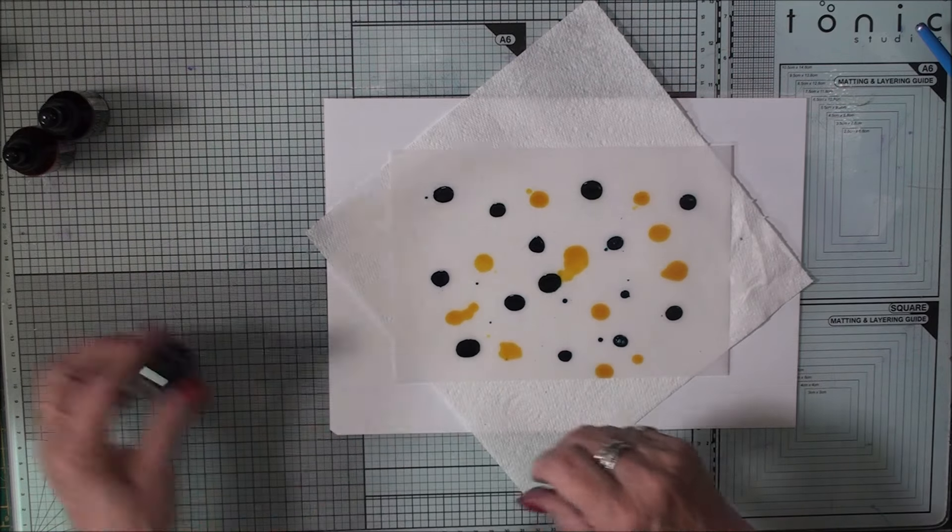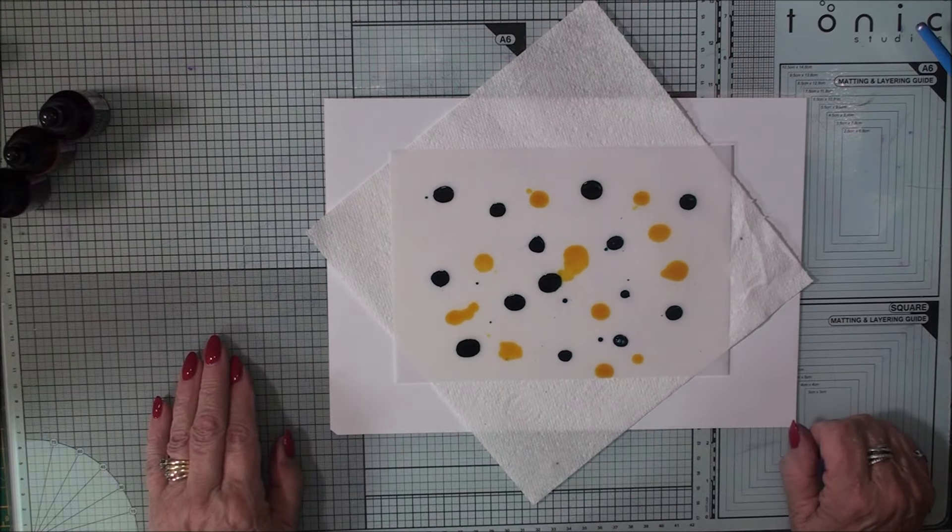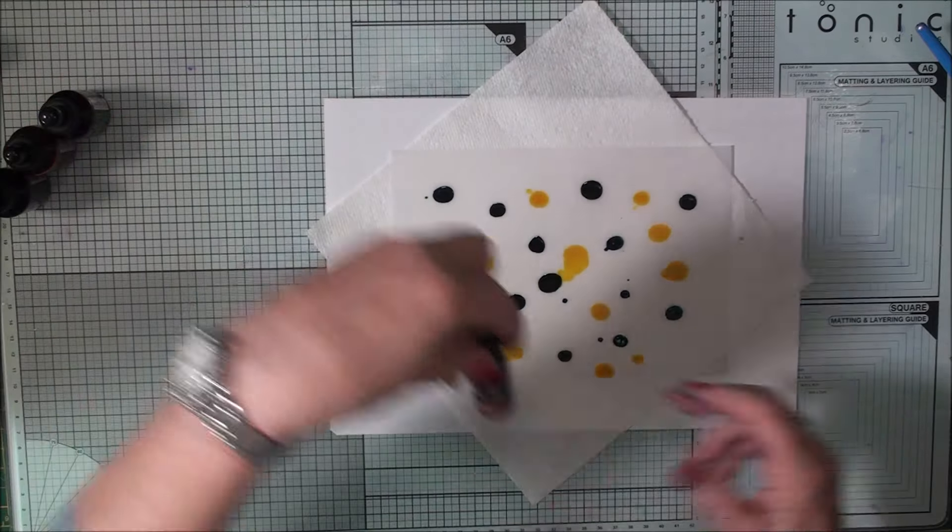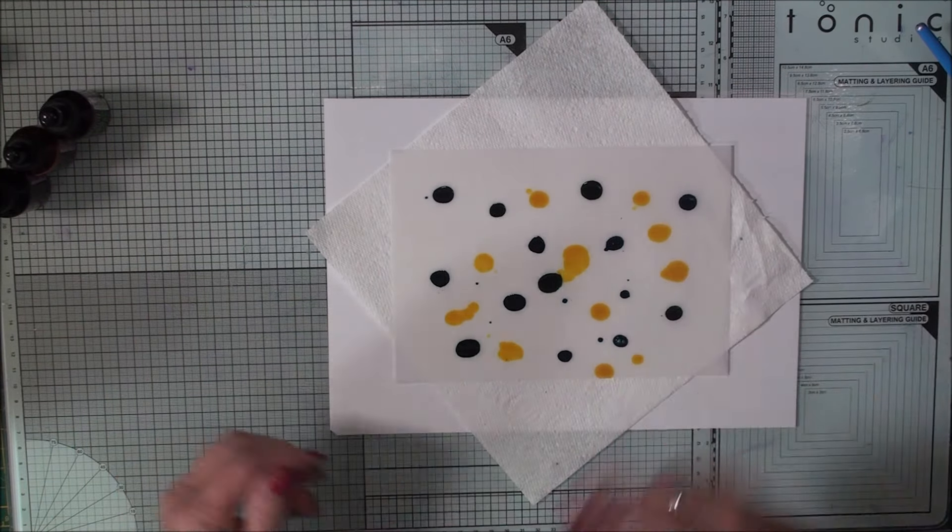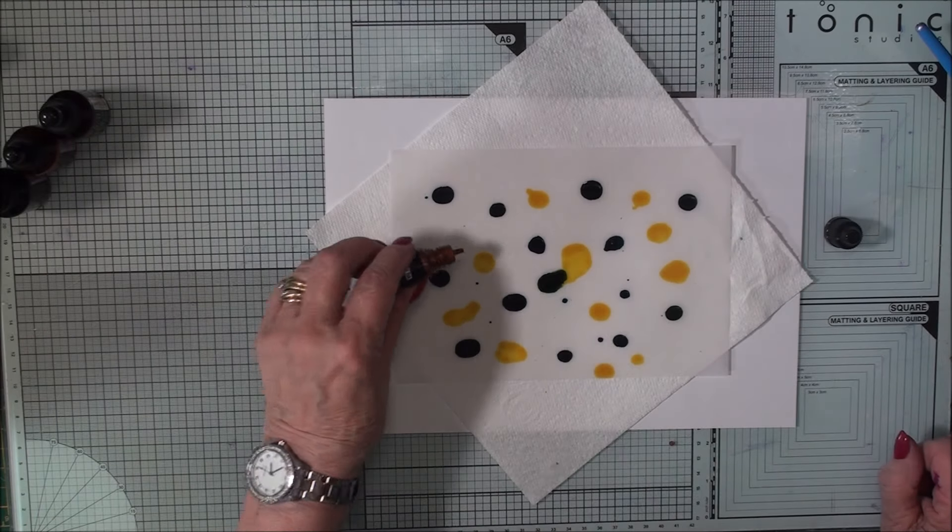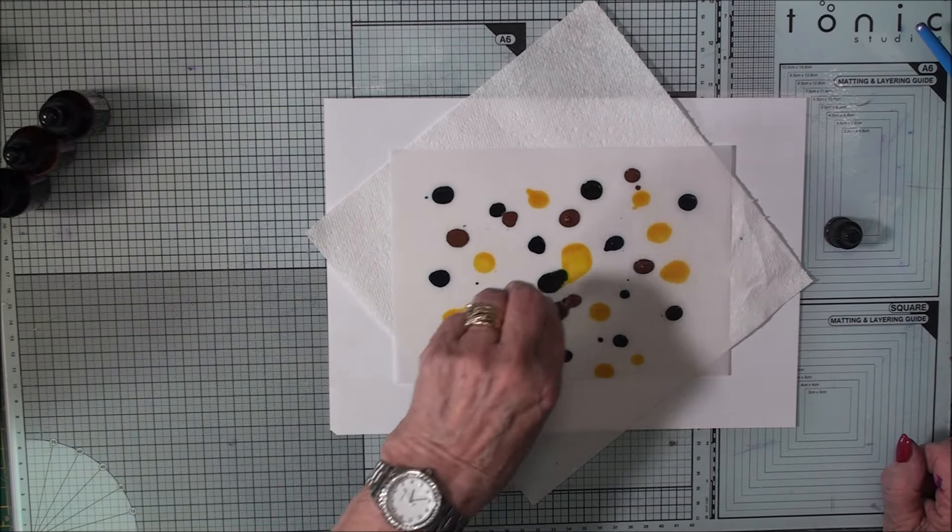Now on the last one, I used the gold. So on this one, I think we'll use the copper. So we'll give it a good shake and then we'll add some bits to the colours.